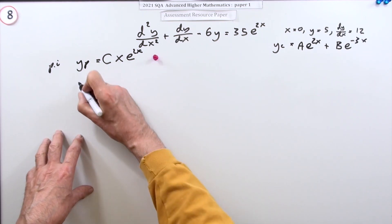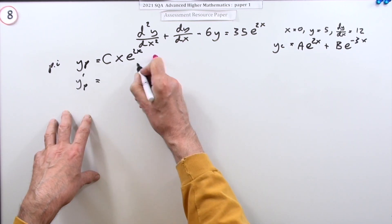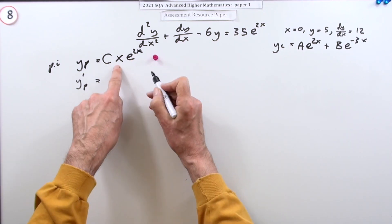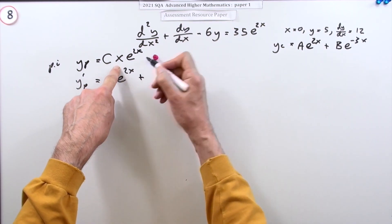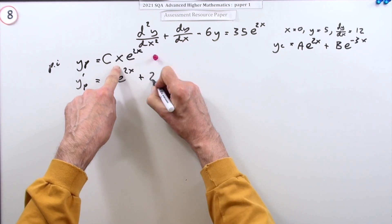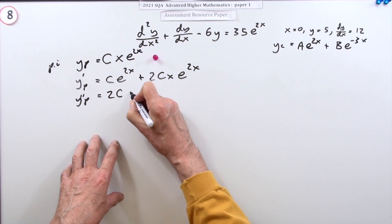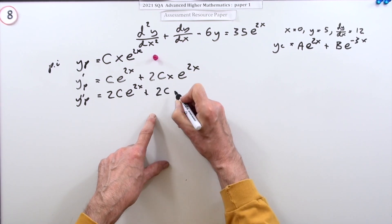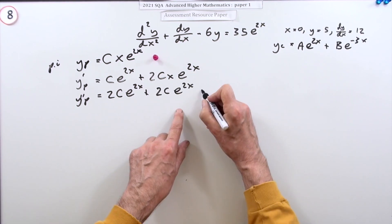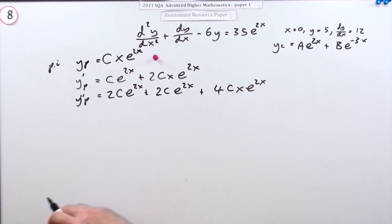To substitute y_p into the equation we need its derivatives. Using the product rule on y_p = cxe^(2x): the first derivative y_p' = ce^(2x) + 2cxe^(2x). For the second derivative, differentiating again: y_p'' = 2ce^(2x) + 2ce^(2x) + 4cxe^(2x) = 4ce^(2x) + 4cxe^(2x). Finding both derivatives earns a mark.